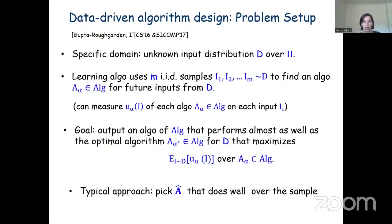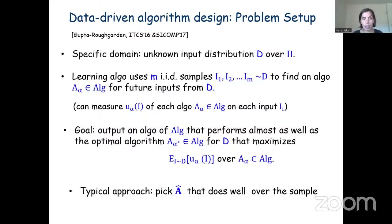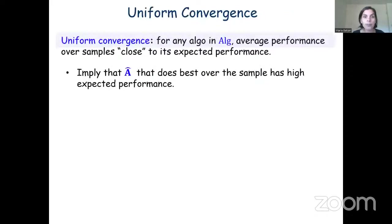Mathematically, the goal is to find an algorithm from the family that performs almost as well as the optimal algorithm A_{α*} with respect to the fixed unknown distribution — the algorithm that maximizes expected utility over instances drawn from D. A natural approach is to find an algorithm that does well over the training set of typical instances, but this brings a key question called sample complexity: how large must the training set be to guarantee that good performance on training instances translates to good performance on new instances?